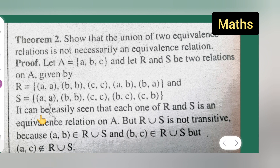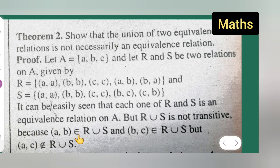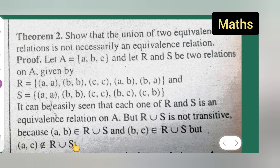It can be easily seen that each one of R and S is an equivalence relation on A, but R∪S is not transitive. R∪S is not transitive because (a,b) belongs to R∪S, (b,c) belongs to R∪S, but (a,c) does not belong to R∪S.